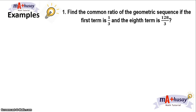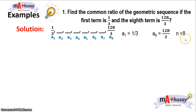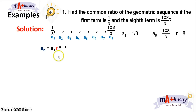Example number one: find the common ratio of a geometric sequence if the first term is one-third and the eighth term is 128 over 3. We know that there are eight terms in the given sequence, so the first term is one-third, the eighth term is 128 over 3, and n is equal to 8. To find the common ratio using the geometric sequence formula, we will substitute these values.